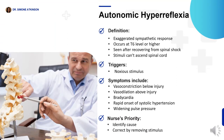The nurse must assess for autonomic hyperreflexia in patients with spinal cord injury. This is an exaggerated sympathetic nervous system response that occurs with injuries at level T6 or higher, but is only seen after the client recovers from spinal shock. Autonomic hyperreflexia occurs when stimuli cannot ascend the spinal cord. A noxious stimulus triggers massive vasoconstriction below the level of the injury, vasodilation above the injury, bradycardia, and rapid onset of systolic hypertension with a widening pulse pressure. The nurse's priority is to identify and correct the cause by removing the stimulus.